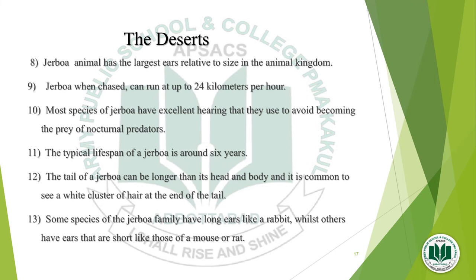The jerboa has the largest ears relative to body size in the animal kingdom. When chased, jerboas can run at up to 24 kilometers per hour. Most species have excellent hearing, which they use to avoid nocturnal predators. The typical lifespan of a jerboa is around 6 years. Their tail can be longer than their head and body, and it is common to see a white cluster of hair at the end of the tail. Some species have long ears like a rabbit while others have ears as short as those of a mouse or rat.